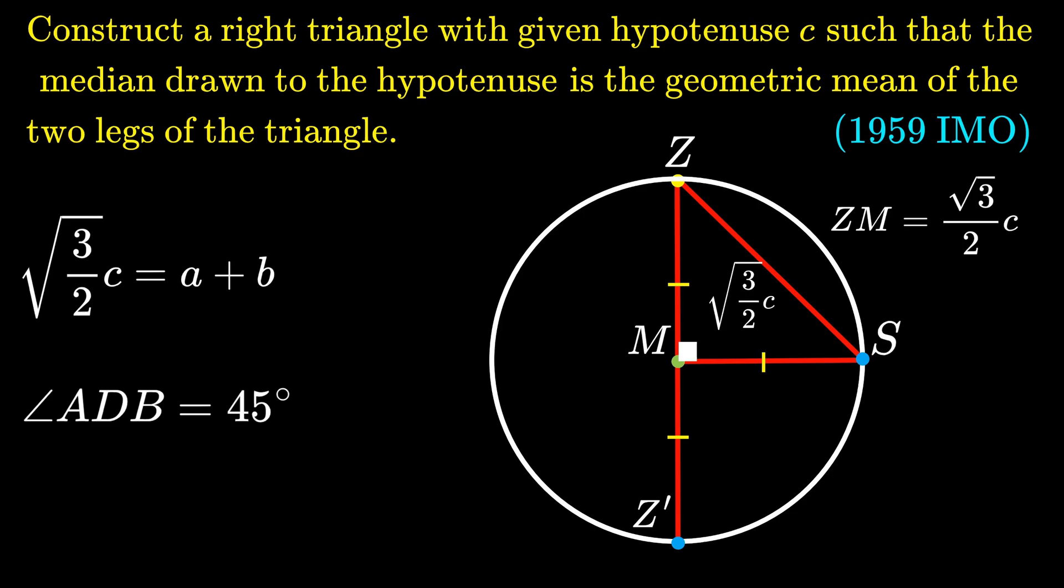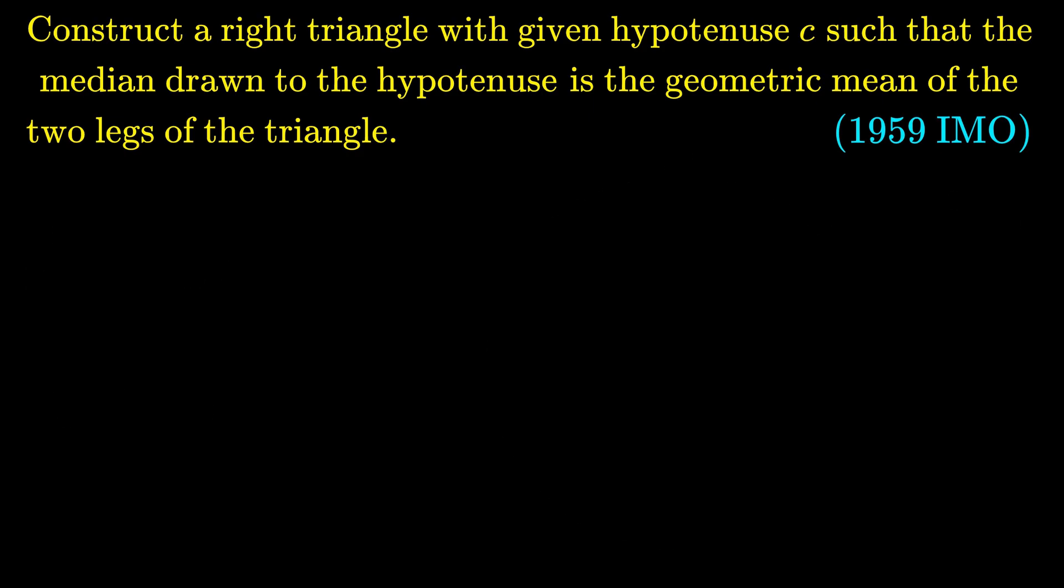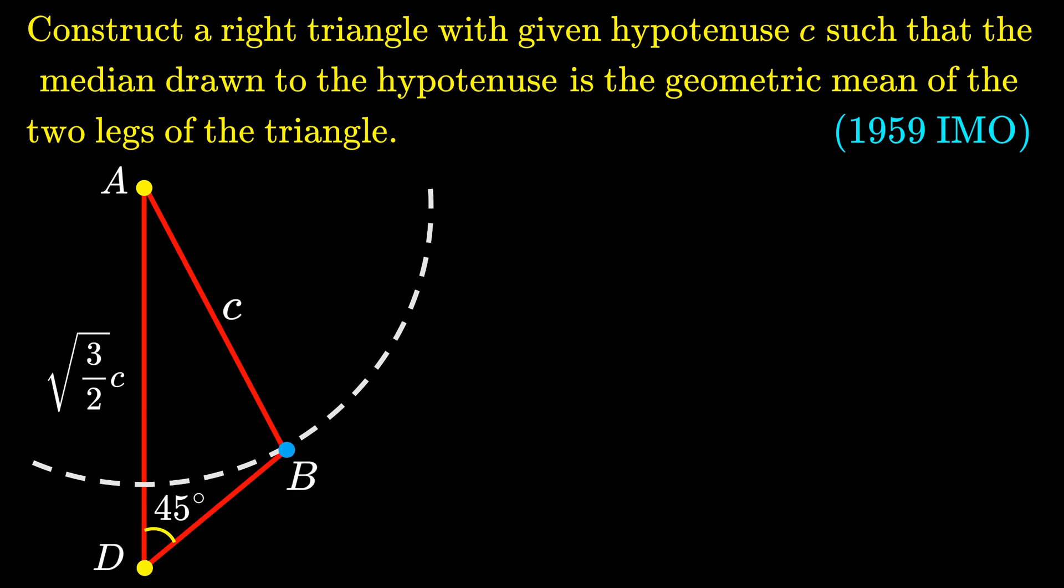Now we proceed with the construction of triangle ABC by first drawing the length √(3/2) · C from A to D. We then construct a ray emanating from D and a circle with radius C centered at A such that they both intersect at point B. Lastly, point C can be constructed by dropping a perpendicular from B to line AD.